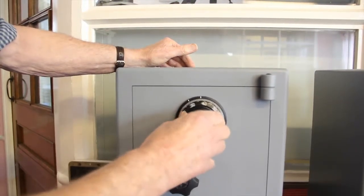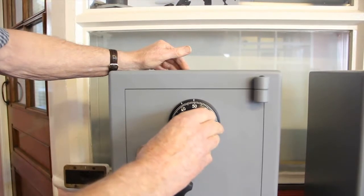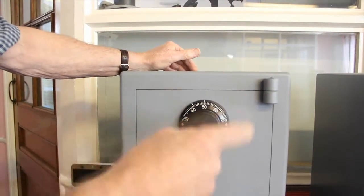Once, approach it very slowly so you don't have to go past it, because if you do you have to go through the whole sequence again. Stop. So we've done 50, 25, 50.